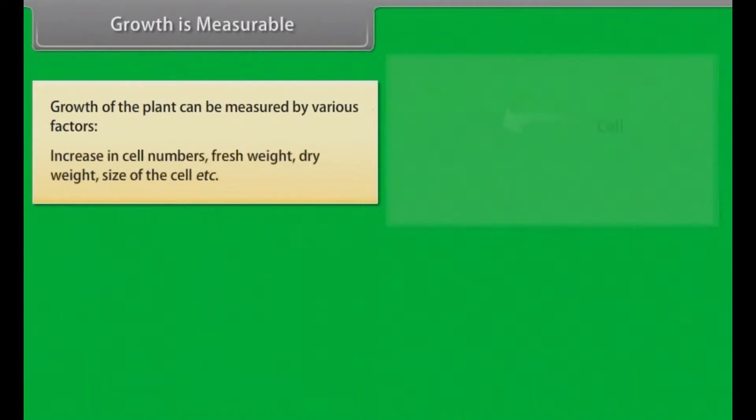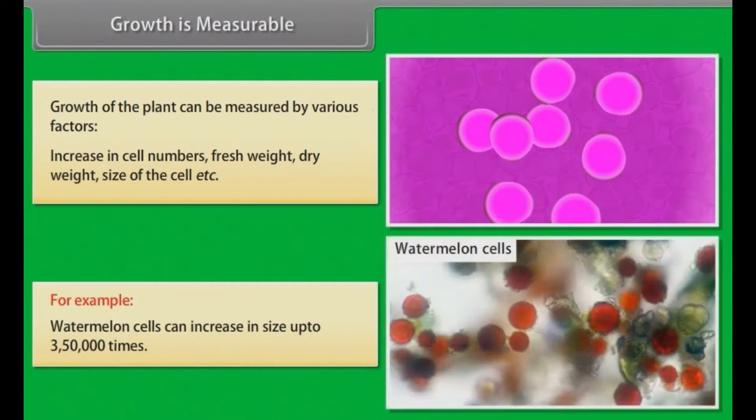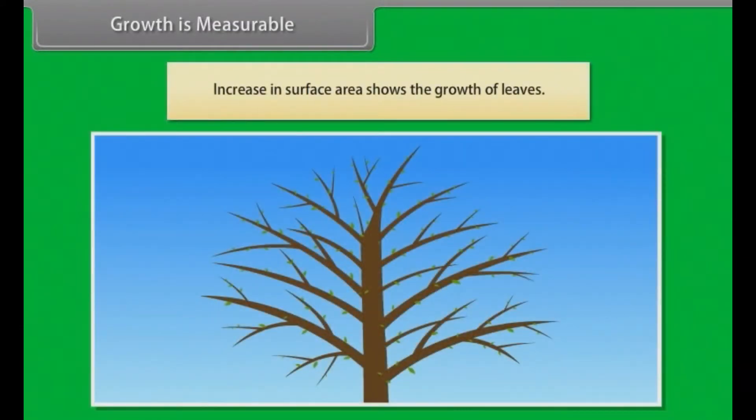Growth is measurable. Growth of the plants can be measured by various factors, increase in cell numbers, fresh weight, dry weight, size of the cell etc. For example, watermelon cells can increase in size up to 3,50,000 times. Increase in surface area shows the growth of leaves.